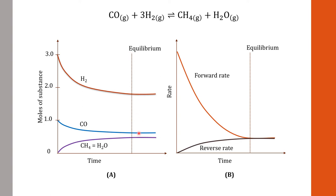Looking at the plot of number of moles of substance against time, at the equilibrium point the amounts of substances are not the same — hydrogen gas still has more than carbon monoxide, and more than methane and gaseous water. We say that this point is the equilibrium state from the fact that the amount of substance from this point forward remains unchanged.